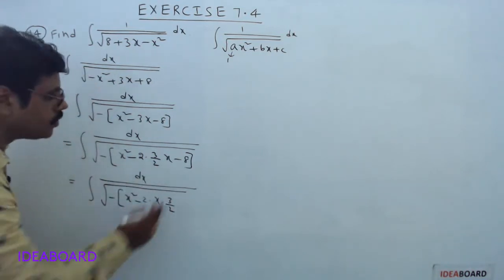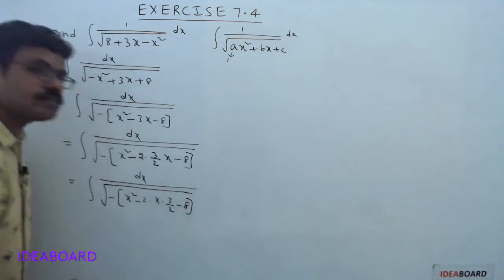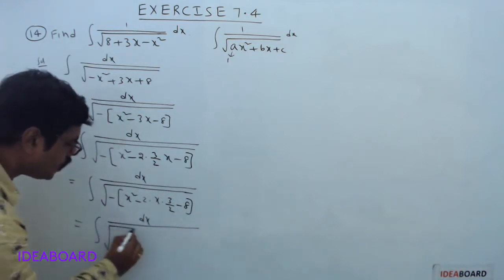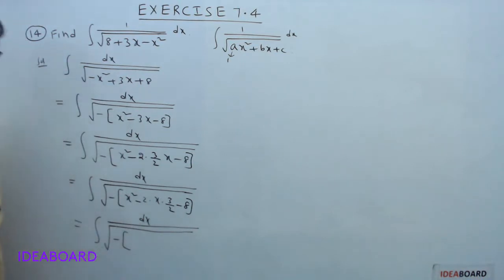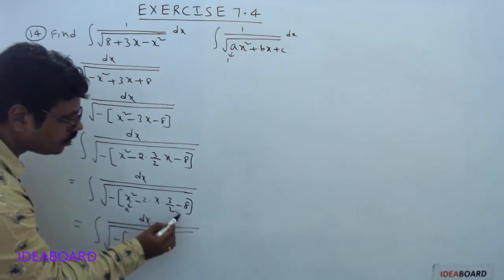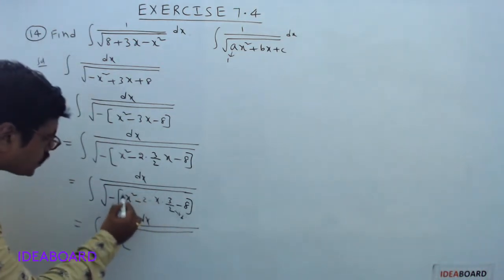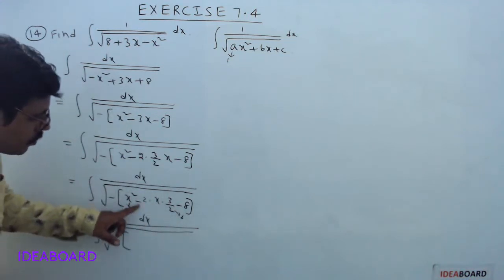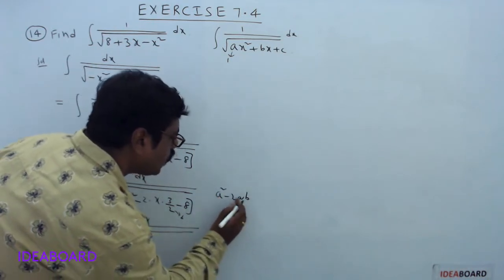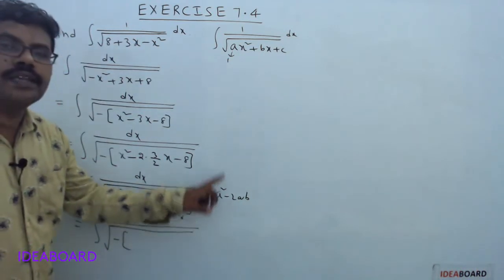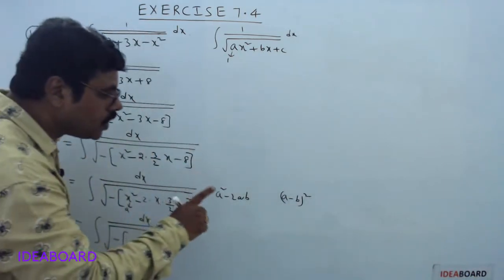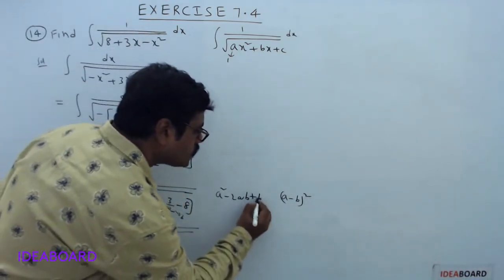This equals integral dx divided by square root of minus, where if we consider x as 'a' and 3/2 as 'b', this expression x² minus 2·x·(3/2) is of the form a² minus 2ab. To make this expression a perfect square — that is, (a minus b)² — we need one more term: plus b², which is plus (3/2)².